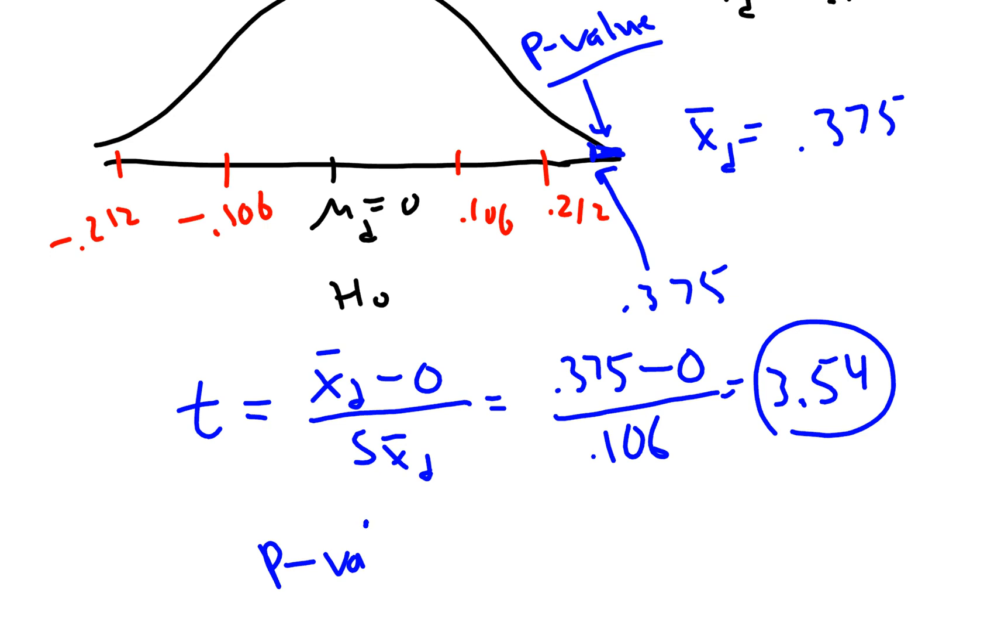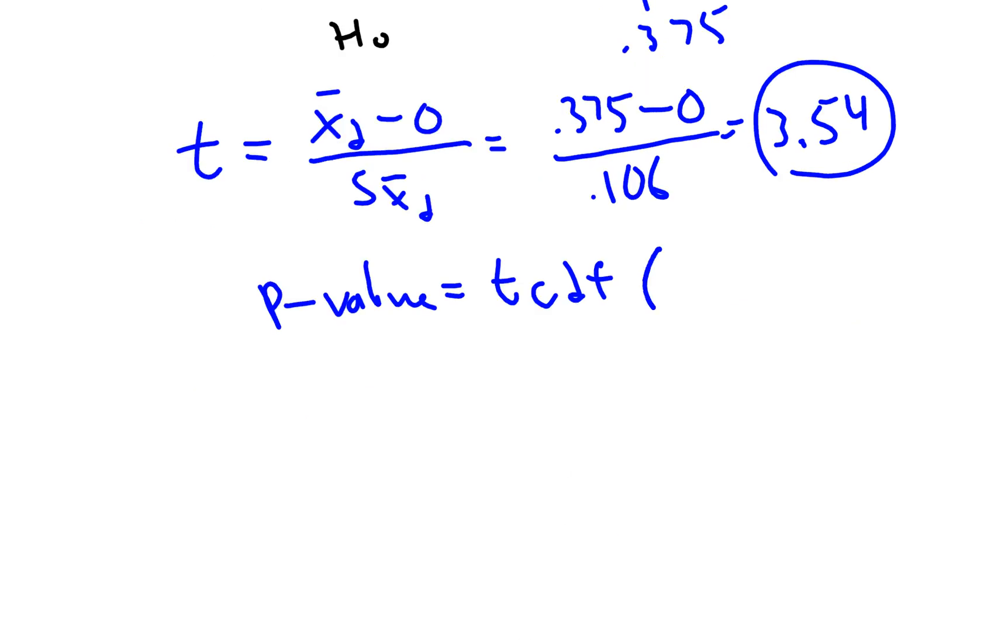To get your p-value, there's something in the TI-84 called the TCDF, cumulative density function. What you want to do is type in 3.54, some huge number. The next thing you'll be asked for is something called DF. DF stands for degrees of freedom. In this problem, it's always your sample size minus 1. So degrees of freedom are going to be 12 minus 1 or 11.